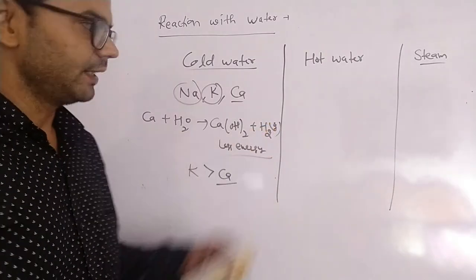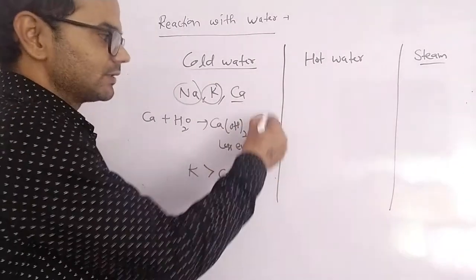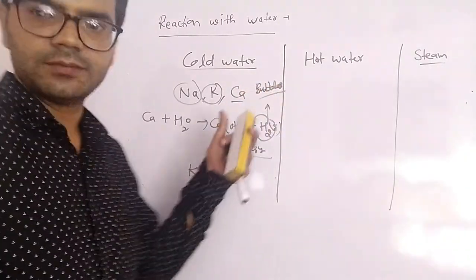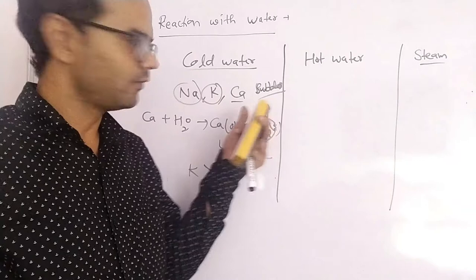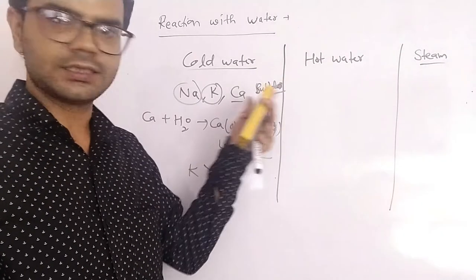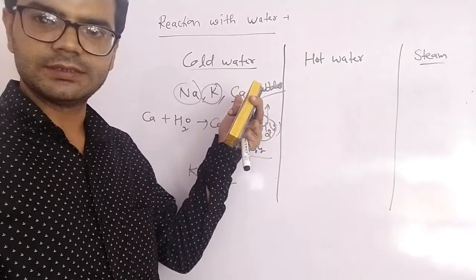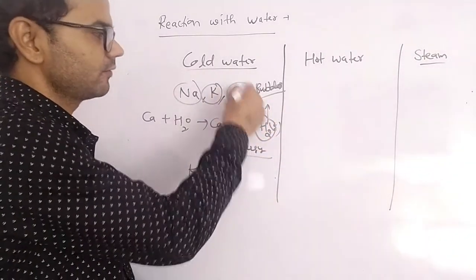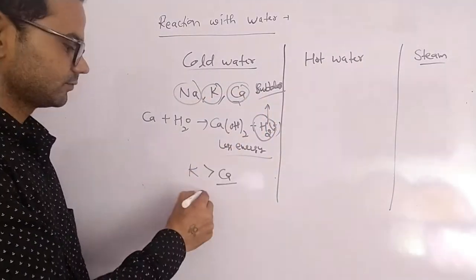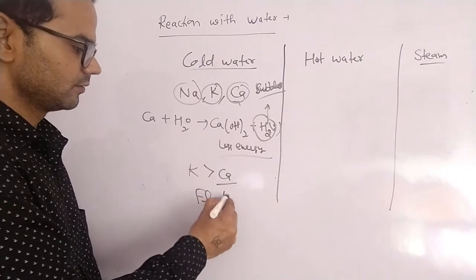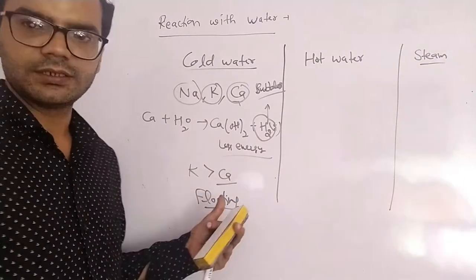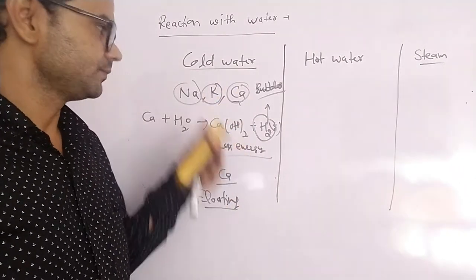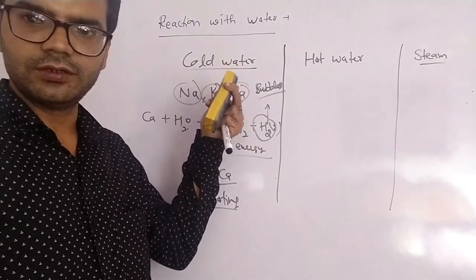Bubbles of hydrogen gas are formed, and these bubbles stick to the calcium metal surface, so calcium also starts floating on the surface. You will see the calcium metal floating on the surface. This is the reaction of active metals with cold water.